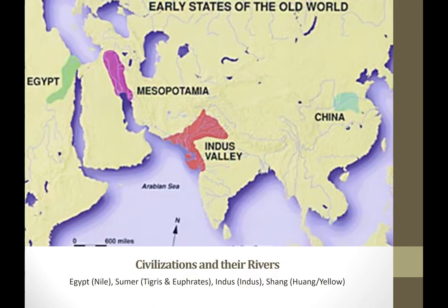This map shows a general overview of all the different civilizations we're going to talk about, as well as the rivers associated with them. This basically covers everything in the first part of our class. We'll begin with Mesopotamia and the two rivers there - the Tigris and the Euphrates. After that we'll talk about Egypt, which is where the Nile is. Following that, we'll talk about the Indus Valley civilization with the Indus River. Then we move over to China where we talk about the Huang River and the Yellow River as well. All these early civilizations are grouped around rivers.